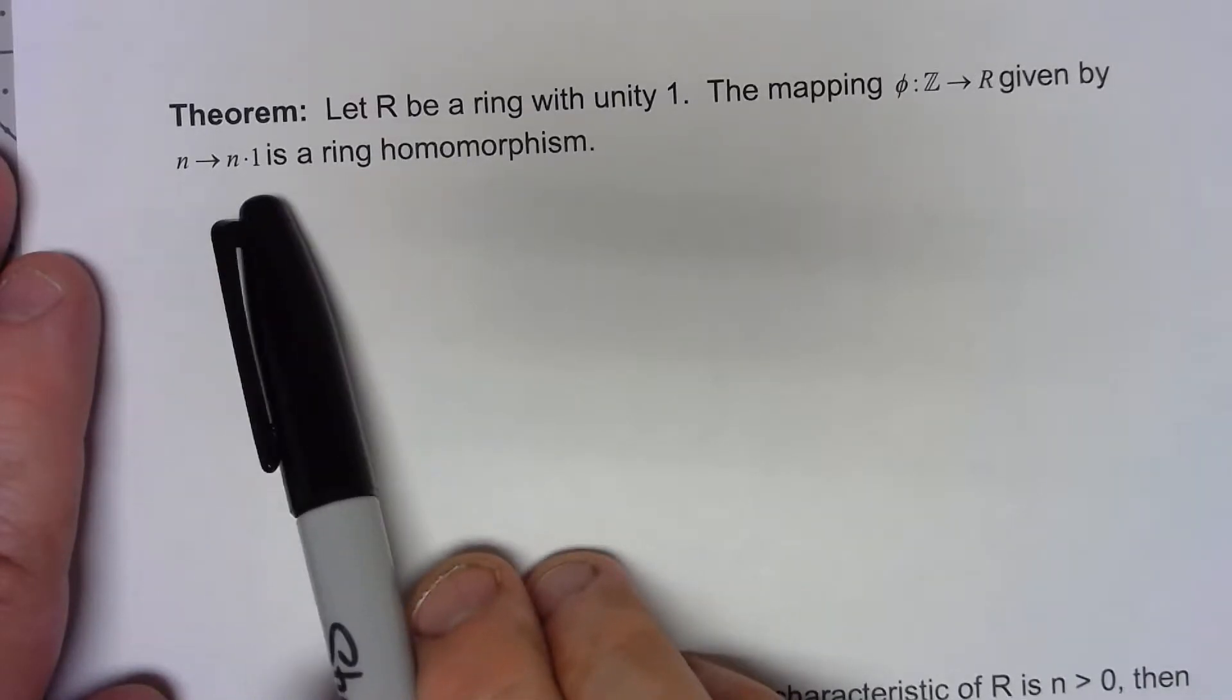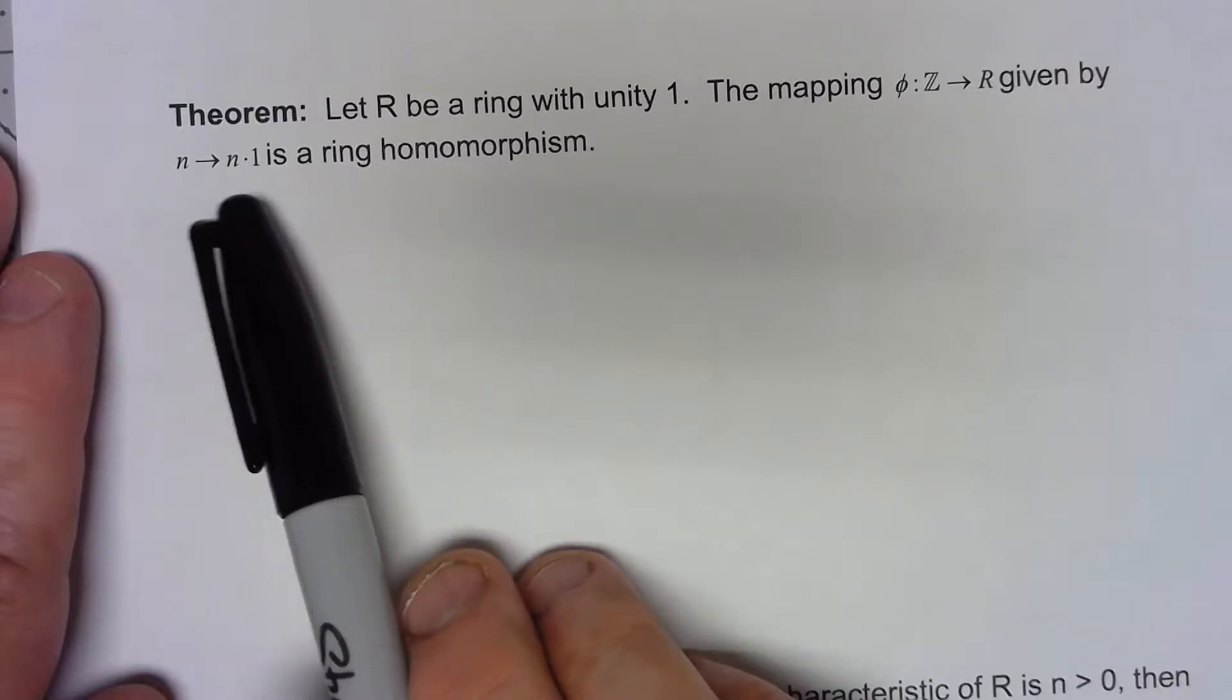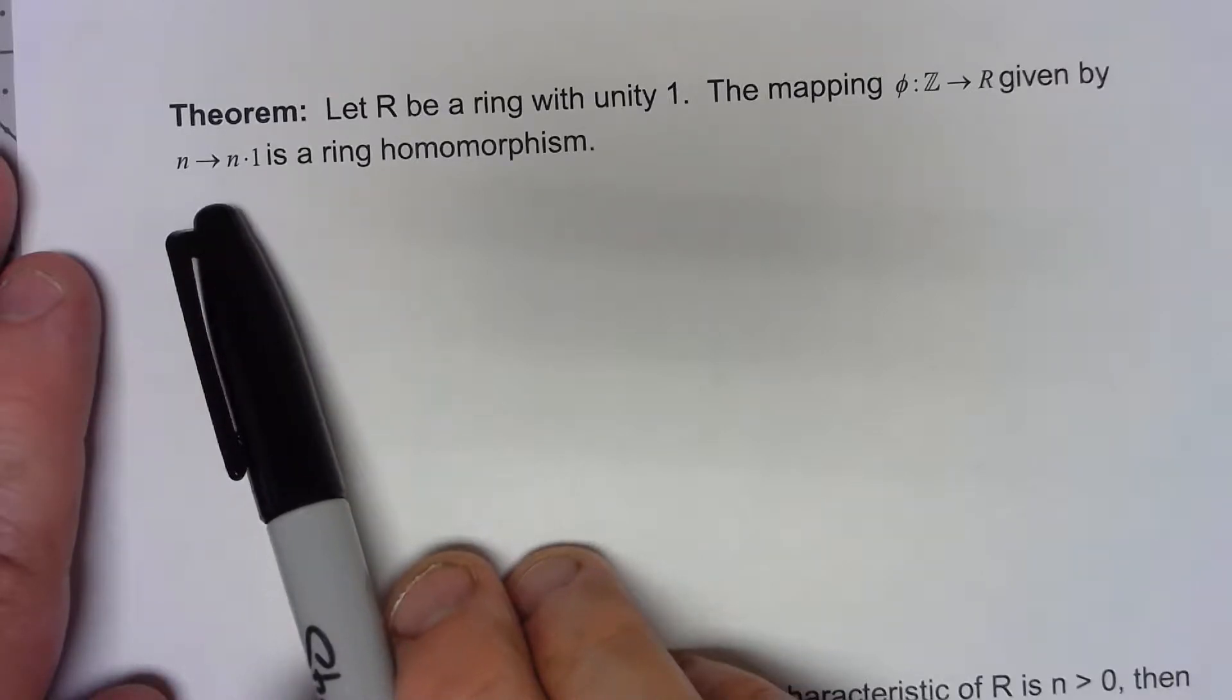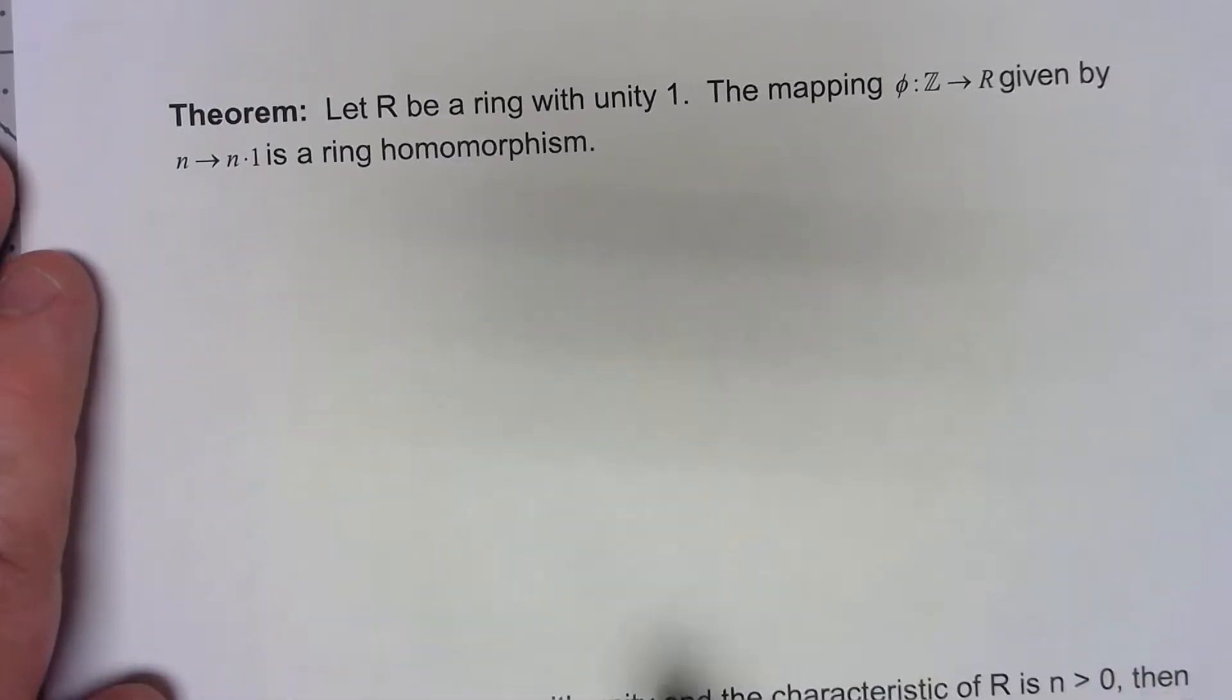And remember what that means in terms of a ring, when you do n times 1, when that's an integer, you're basically adding n copies of 1.